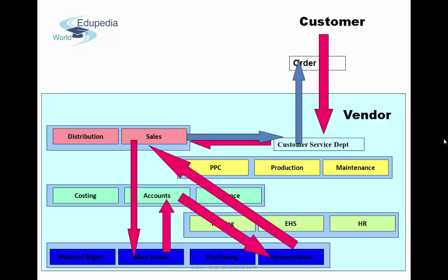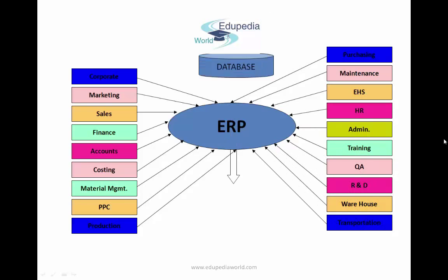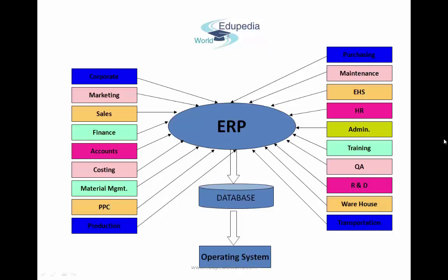This integration is not just required for a single transaction — every task or transaction in a company needs integration between departments. That's why instead of using different software for different departments, we use a single software on which all departments work, with a single database and single operating system. That's the concept of ERP — enterprise resource planning.